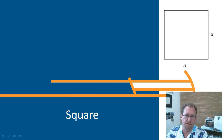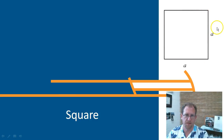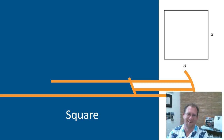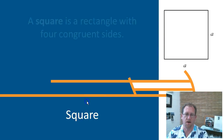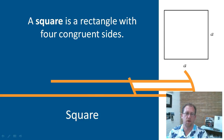If you take a rhombus and force the angles to be 90 degrees, now you have a square. It's a rhombus, which means the opposite sides are parallel, all four sides are congruent, and the opposite angles are congruent — it's just that those angles all happen to be 90 degrees. A rectangle meets a rhombus, and their child is a square. You could say it's a rectangle with four congruent sides, or a rhombus with four right angles — there are a couple of ways to define it.